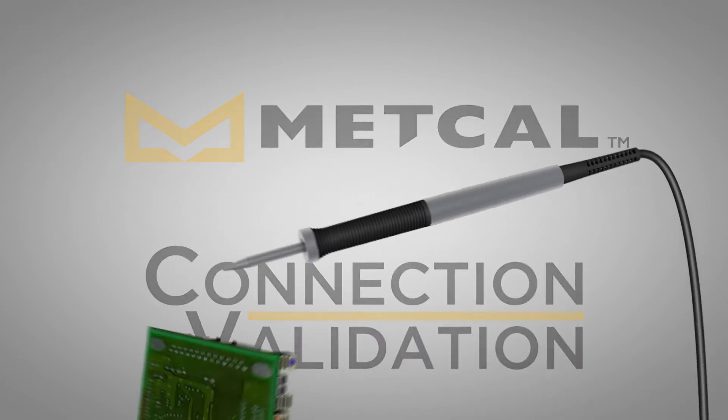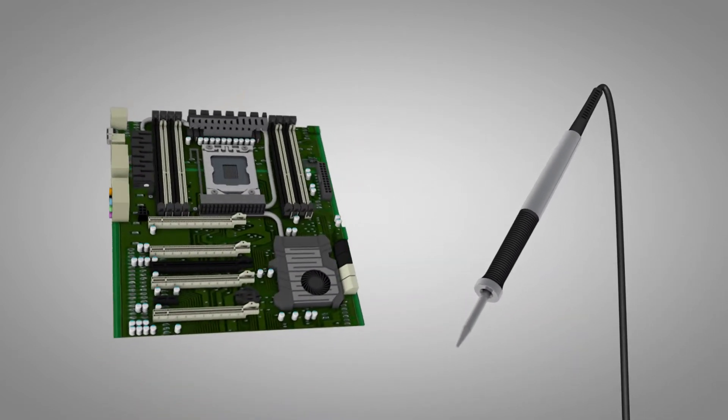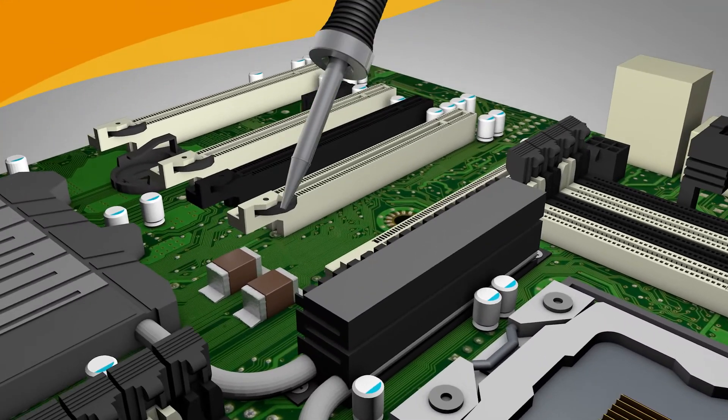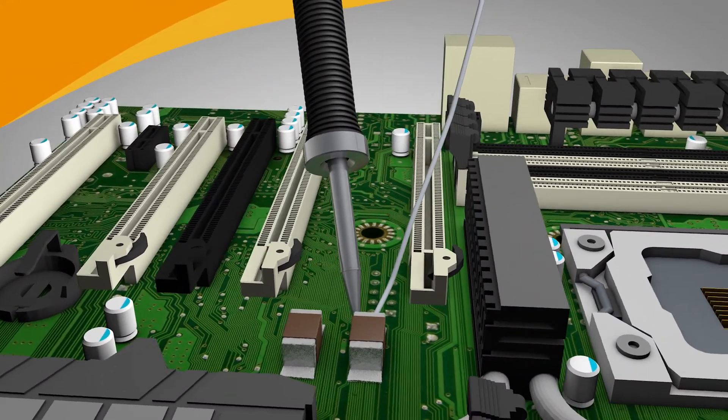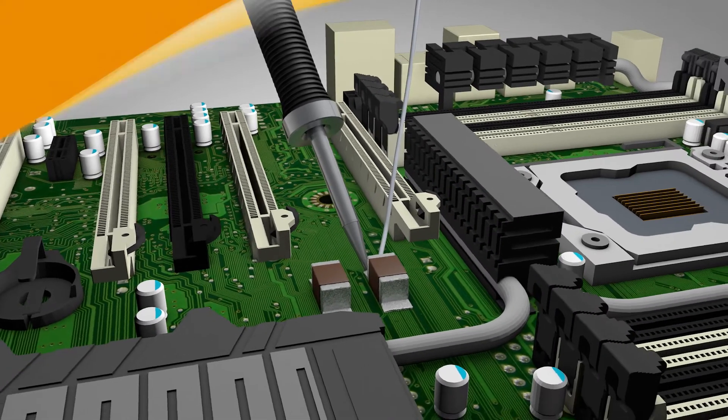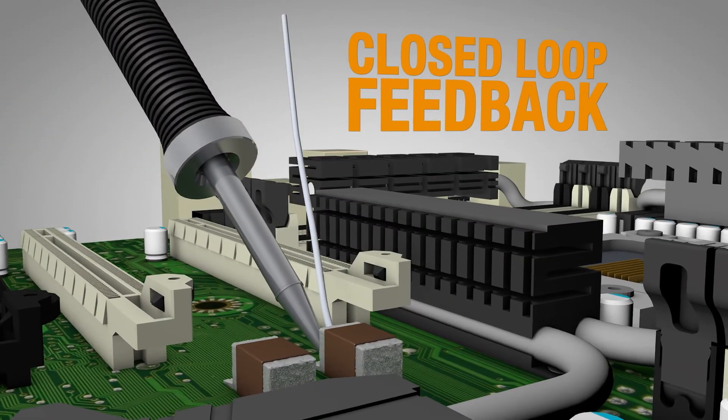The intermetallic compound thickness is critical in the formation of a solder joint. Connection Validation evaluates the quality of the solder joint by calculating the intermetallic compound formation and providing closed-loop feedback to the operator.